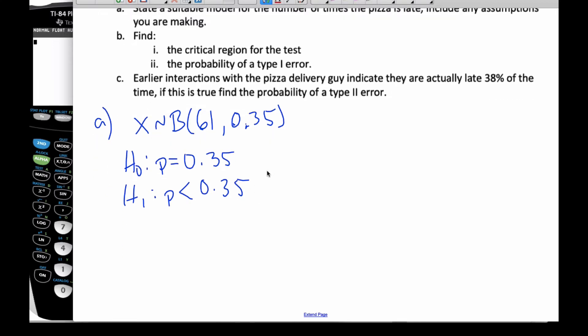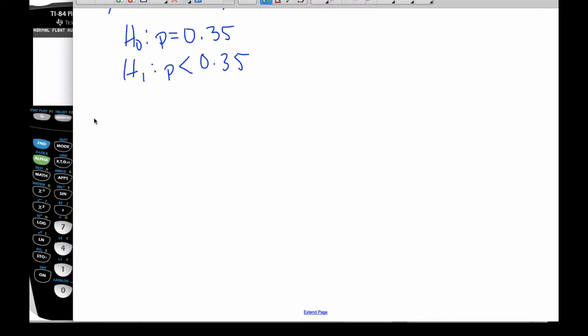If I think about creating a critical region for this test, I have to think about what does this actual test look like. If I think about this, here's my probability being 0.35. I know that there's a bunch of little bars here, all representing a probability of some kind.